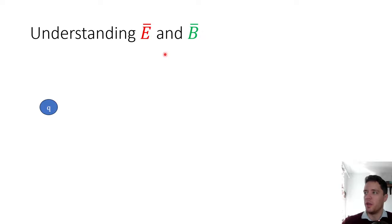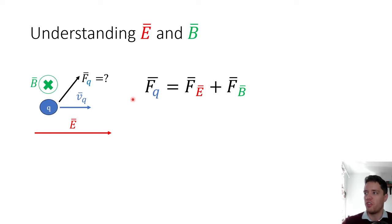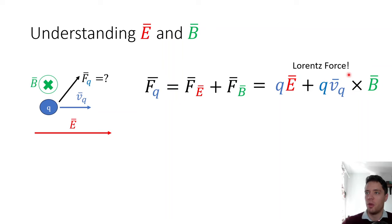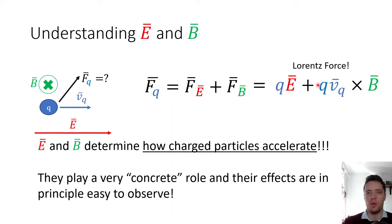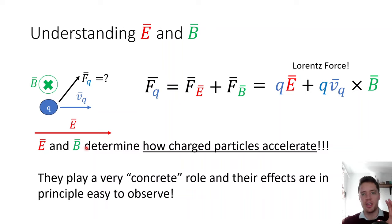To understand the E and B fields, we can place a known charge at a certain location, give it a known velocity, and then if there's an E field and a B field present we can compute the total force on that charge using the Lorentz force law. This is important because it shows that the E field and the B field are real physical fields with a very concrete effect — namely that they cause charged particles to accelerate. In some sense they're the most important fields in Maxwell's equations.